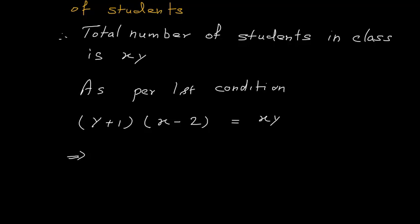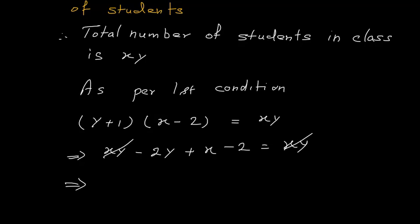From the first condition I get: x·y − 2y + x − 2 = x·y. Cancelling x·y from both sides, this implies x − 2y = 2. This is my first equation.